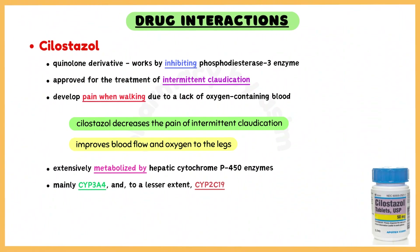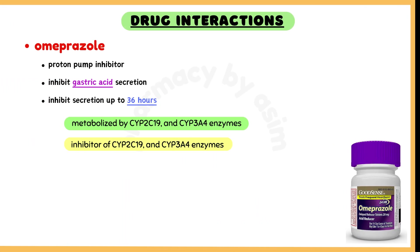Cilostazole is extensively metabolized by hepatic cytochrome P450 enzymes, mainly CYP3A4 enzyme, and to a lesser extent, CYP2C19 enzyme, with metabolites largely excreted in urine.